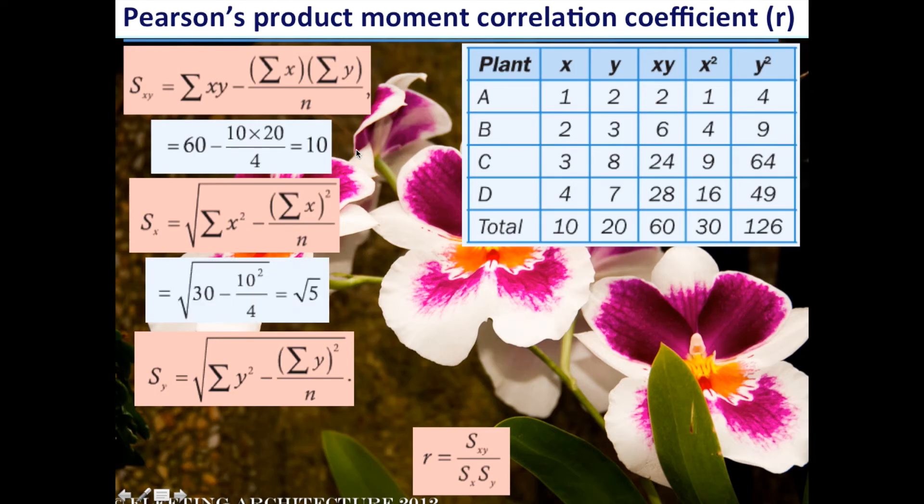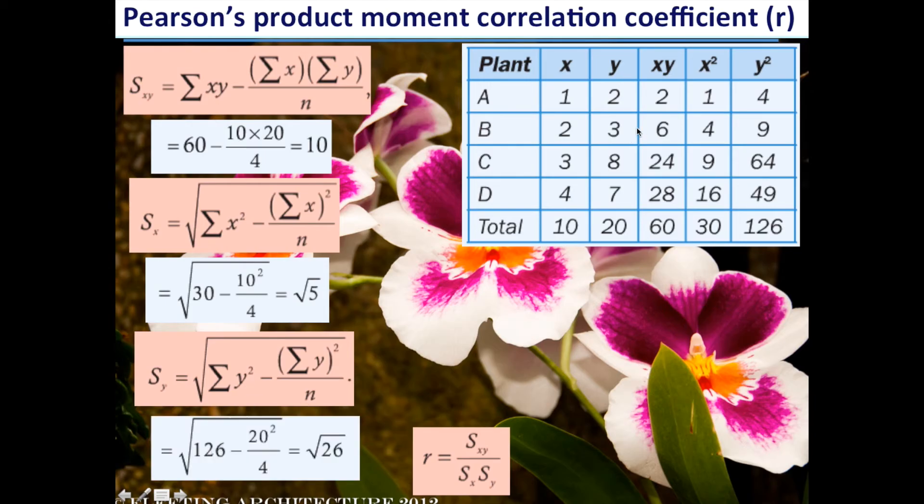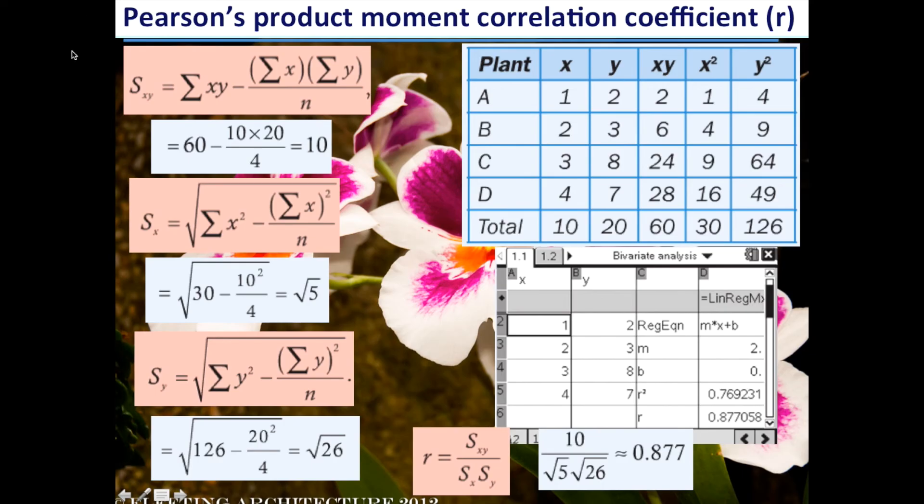Sxy is the sum of x times y, which is going to be 60, minus sigma x times sigma y all over n, giving us Sxy of 10. Sx is going to be the square root of sigma x squared (from this column) minus sigma x, which is 10 squared over n (which is 4), giving us root 5. Similarly, Sy is going to be the sum of y squared, which gives us 126, minus sigma y squared (20 squared) all over n, which is 4, giving us root 26. Substituting all those into r, we end up with a value of 0.877, which suggests there is a strong correlation between the amount of plant food and the number of orchids grown.